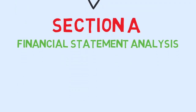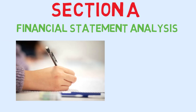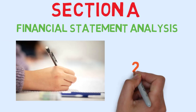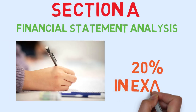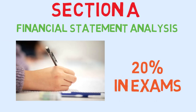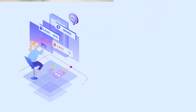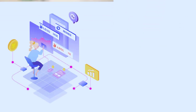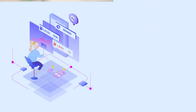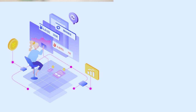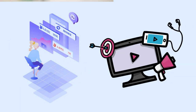We will be starting our lecture on Section A: Financial Statement Analysis. It has the weightage of 20% in exams. Another name of Financial Statement Analysis is Ratio Analysis, and we will learn some of the most important formulas in this video.